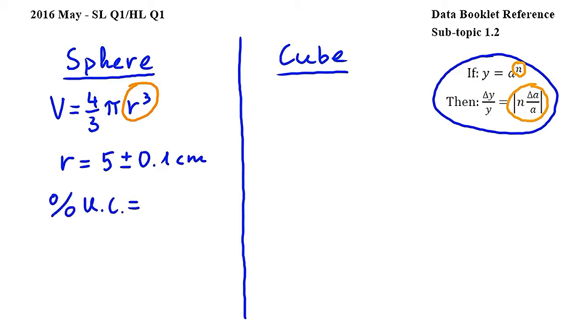Let's substitute into this formula to find the percentage uncertainty. n is the power which is equal to 3. The absolute uncertainty in the radius of the sphere is 0.1 cm over the radius which is 5 cm.